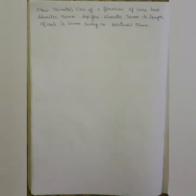The next question is to draw the isometric view of a frustum of a cone. Base diameter is 50 mm, top face diameter is 30 mm, length of axis is 60 mm, resting on a horizontal plane.